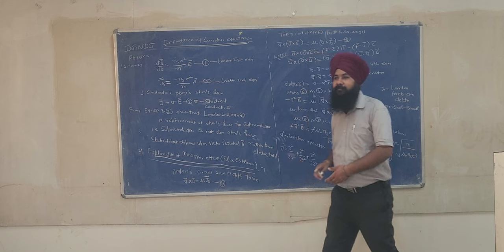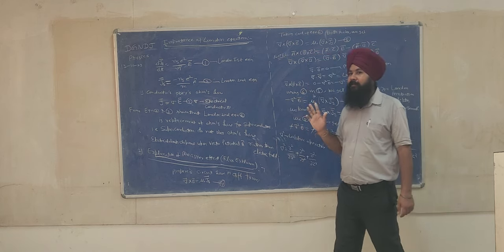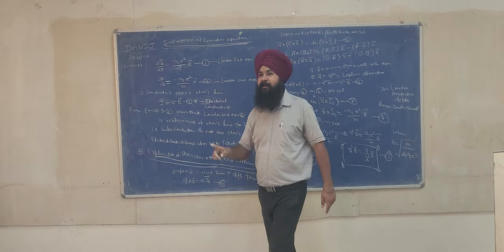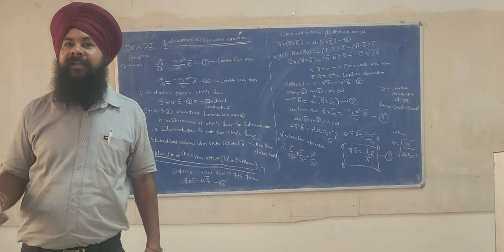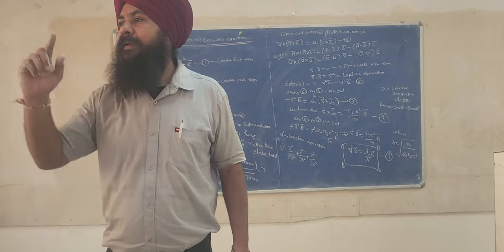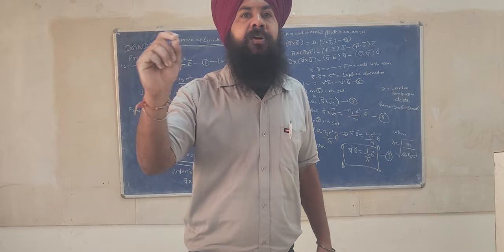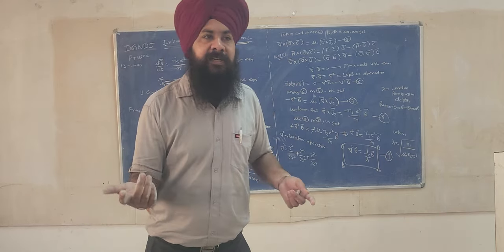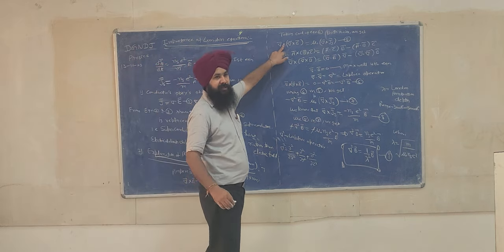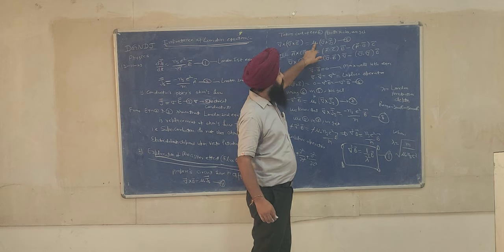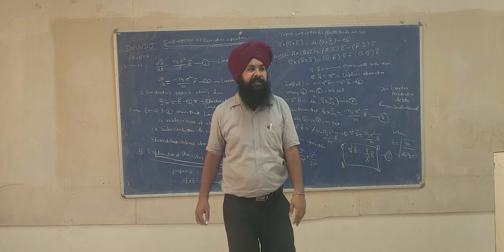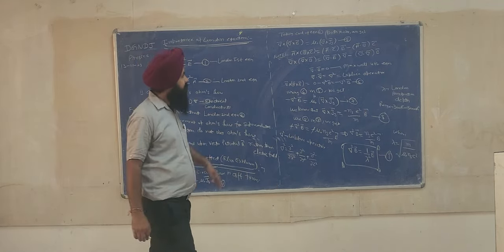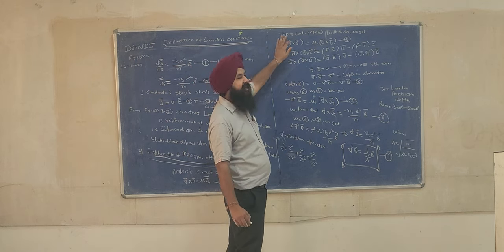Now take the curl of equation number 4. The curl means ∇×. On the left-hand side we apply the BAC-CAB formula: A×(B×C) = A·C·B − A·B·C. This gives (∇·B)·∇ − (∇·∇)·B. Now, ∇·B = 0 by Maxwell's fourth equation, and ∇·∇ is called del-squared (∇²), the Laplacian. So the left-hand side simplifies to −∇²B.